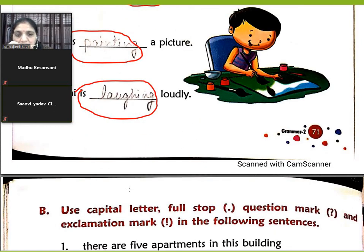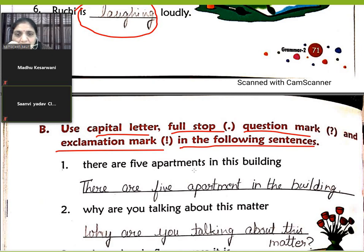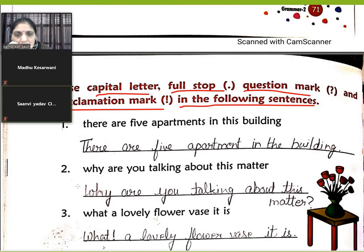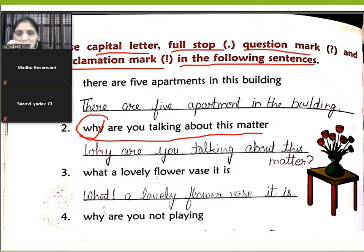Now your last page — use the capital letter, full stop, question mark, and exclamation mark in the following sentences. 'There are five apartments in this building' — capital T at the start, full stop at the end because it is not a question sentence. 'Why are you talking about this matter?' — capital W, and we put a question mark because 'why' is a question word.